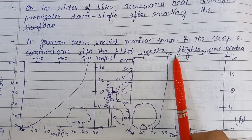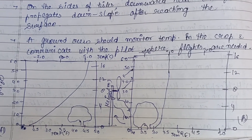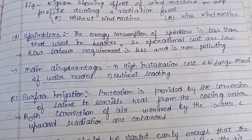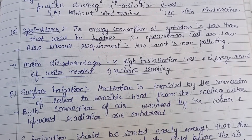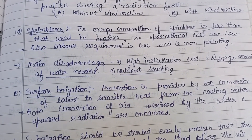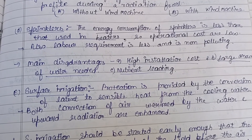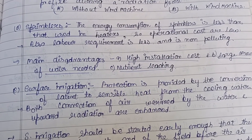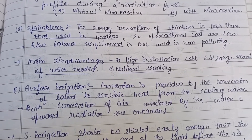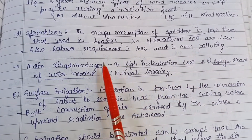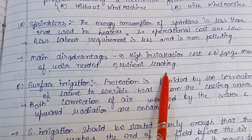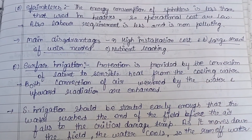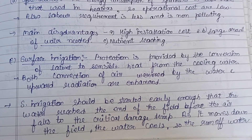Sprinklers have lower energy consumption than heaters, lower operational costs, and lower labor requirements, and they are non-polluting. The main disadvantages are high installation costs, large water requirements, and potential for nutrient leaching.